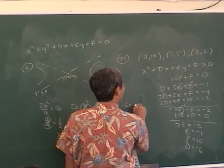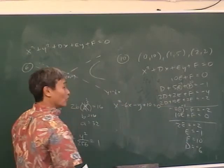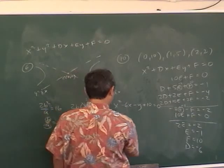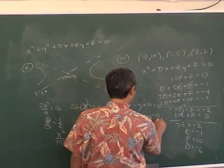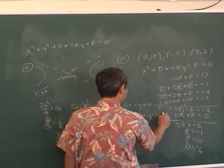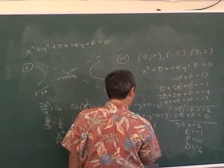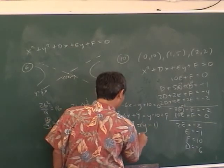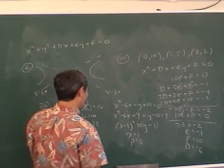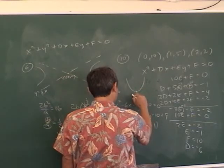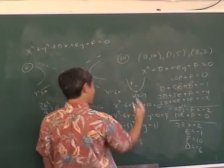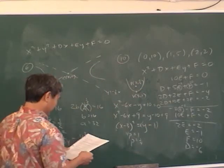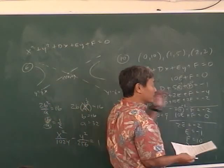The equation of the parabola is x² − 6x − y + 10 = 0. To find the focus, put it in standard form — complete the square: x² − 6x = y − 10, add 9 to both sides, so (x − 3)² = y − 1. The 4p coefficient is 1, so p = 1/4. The parabola opens up, vertex is at (3, 1), and the focus is 1/4 up from the vertex at (3, 5/4).